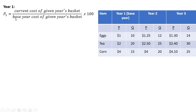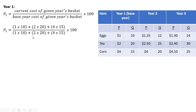So in year one, we're going to calculate the PASH index: the current cost of a given year's basket divided by the base year cost of the given year's basket. The current cost of year one's basket is 1×10 + 2×20 + 4×15. And since year one is the base year, the denominator will be the exact same calculation: 1×10 + 2×20 + 4×15. So our numerator and denominator are the same — 110 divided by 110, all multiplied by 100 — giving us 100.